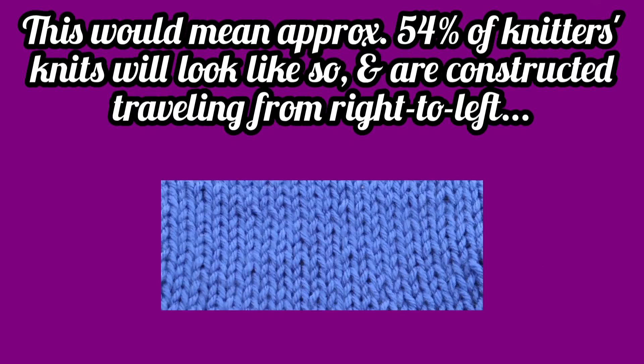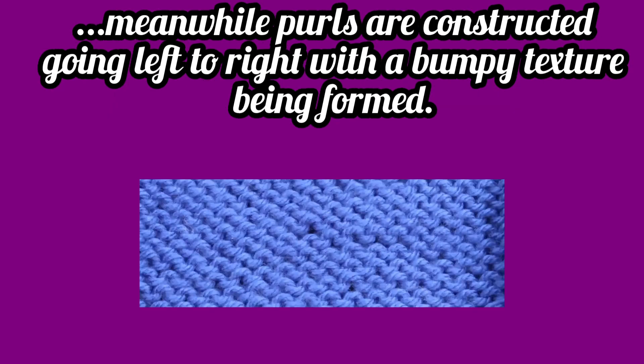Doing the math, this would mean that a little over half — 54% of people who knit — would likely form their knits in a V-shape and travel from right to left on their first row after casting on their stitches.